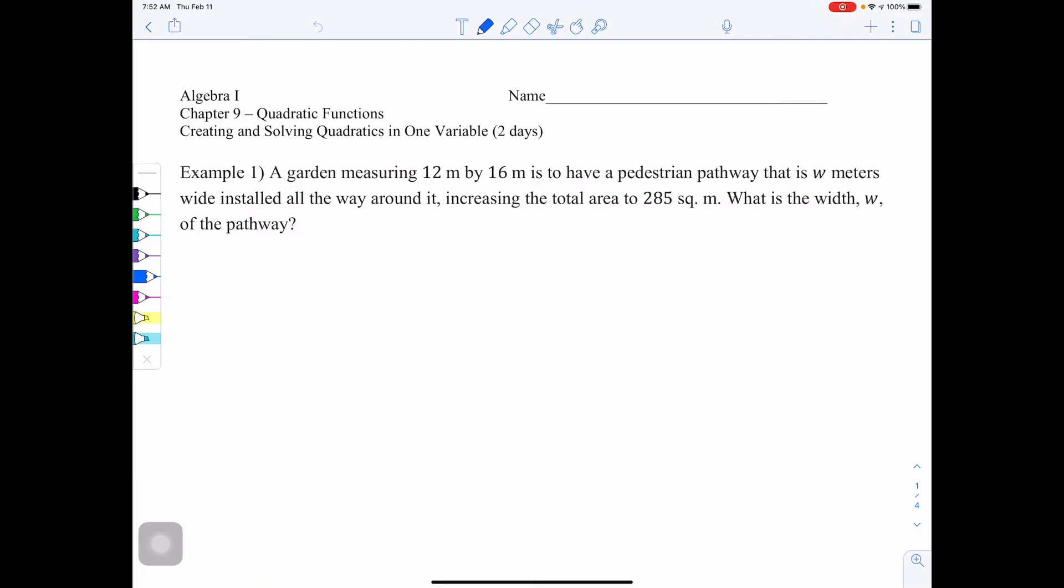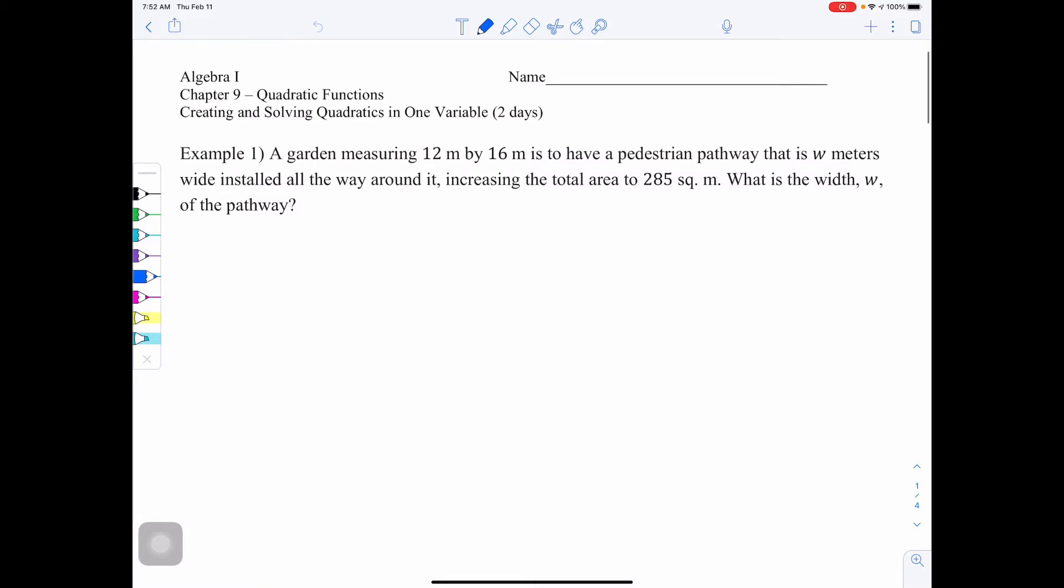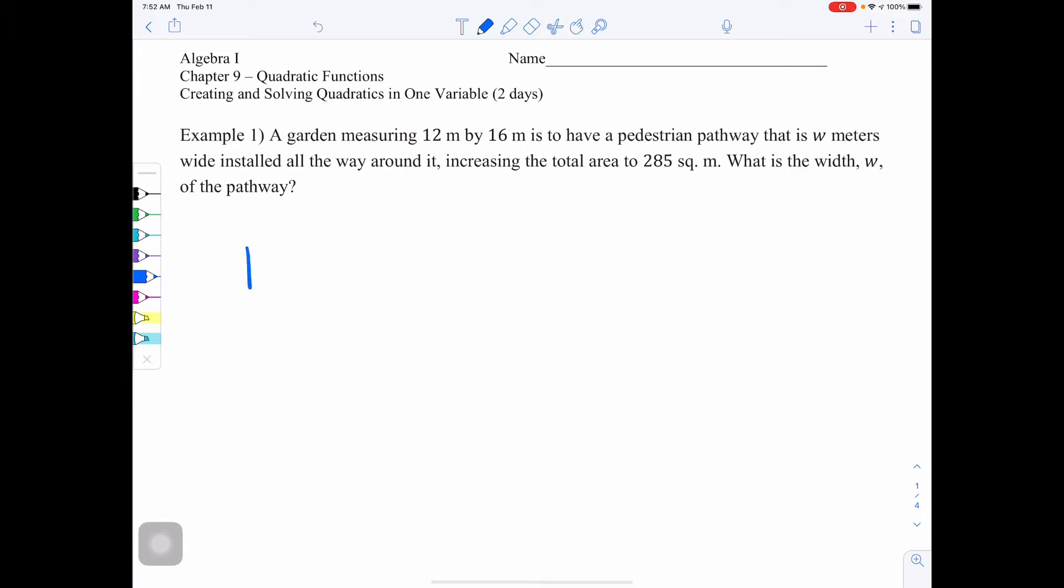I would suggest that when we have a problem that describes a certain type of picture, you actually draw that picture. So I'm going to draw my original rectangular shape and we know it's a garden, 12 meters by 16 meters. So this is 12 and then this is 16. Now they want to put a pathway around that. So I'm going to draw a pathway.